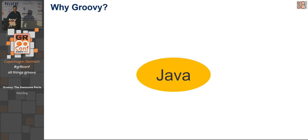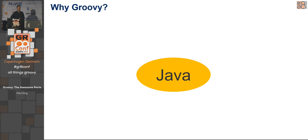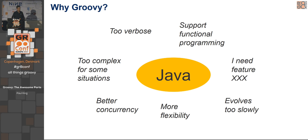Why did Groovy come about? The initial person developing Groovy came from a Java background and quite liked Java, but he had friends who liked Ruby, Smalltalk, and Python, and they were saying Java is just old hat enterprise stuff. He didn't really want to give up the JVM because there were lots of nice things he liked about it, but he thought it was a bit too verbose. There was features he wanted and some complexity he didn't like.